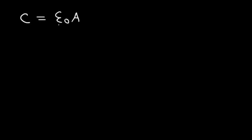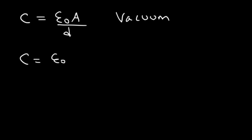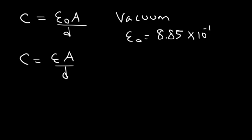The equation C equals epsilon sub-naught times A over D gives the capacitance of a capacitor if a vacuum is used as the dielectric — if there's nothing in between the two metal plates. Epsilon sub-naught is the permittivity of free space: 8.85 times 10 to the minus 12 coulombs squared per newton per square meter. Make sure you know that value because you're going to use it a lot.